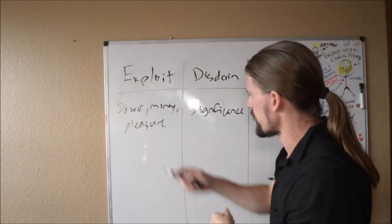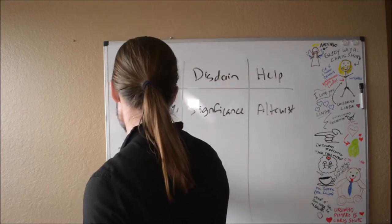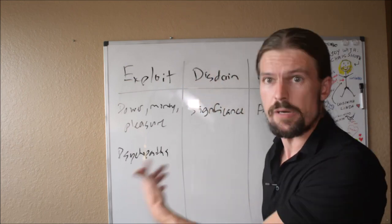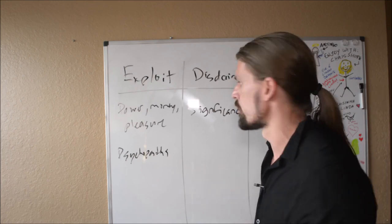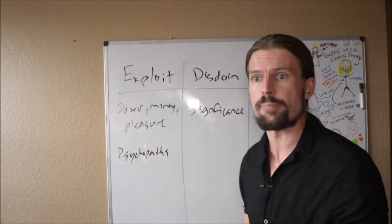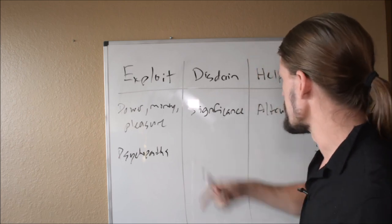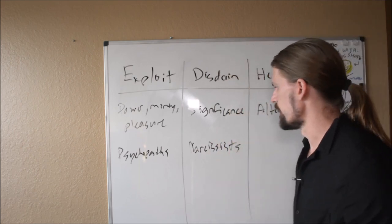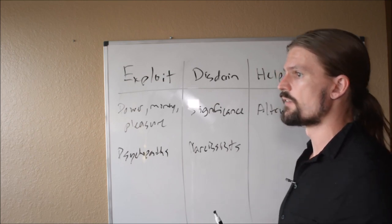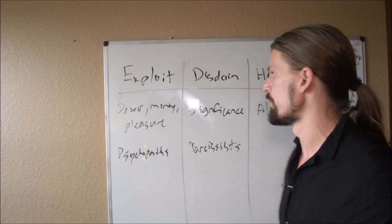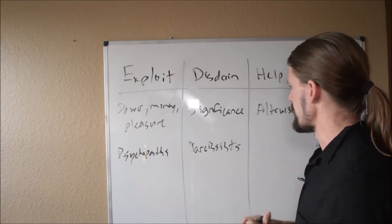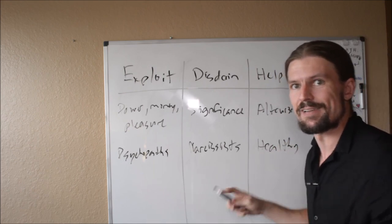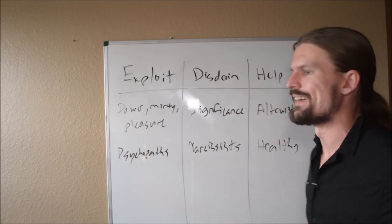So you could put a psychological name on each of these, by the way. So the exploiters are psychopaths. They just use people and destroy people for their own gain. And they, in most cases, don't really feel bad about it. So these are psychopathic characteristics. Now the disdain people are basically narcissists. They feel great about themselves because they're so much better than other people and they just kind of stew in their feelings of superiority.